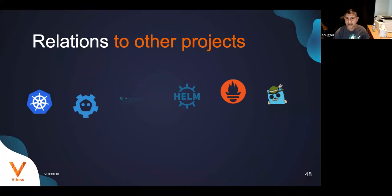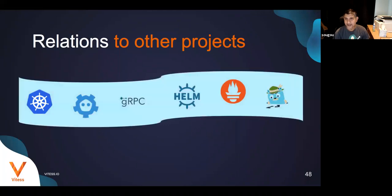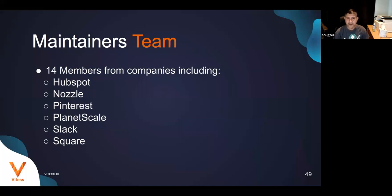Vitess uses several other CNCF projects. The team is also looking at potentially adding support for Envoy to consolidate and distribute connections when scaling to thousands of shards. The maintainers team is now quite diverse: Slack and Square are major contributors, along with Pinterest, HubSpot, and Nozzle. Nozzle contributed the Helm charts, Pinterest made many query-related contributions, and HubSpot has added orchestration-related contributions.